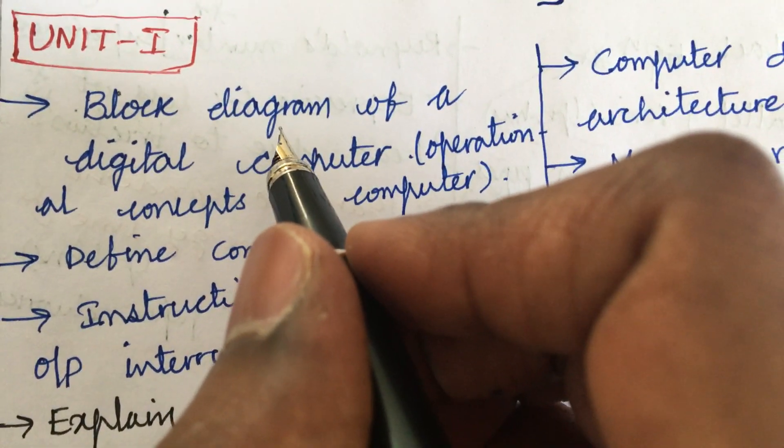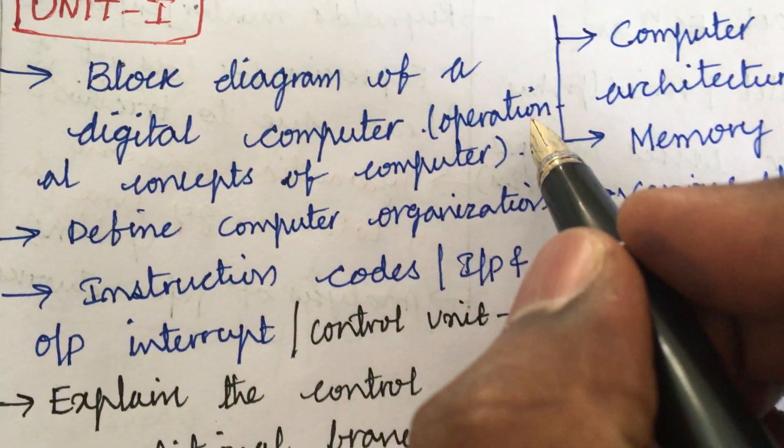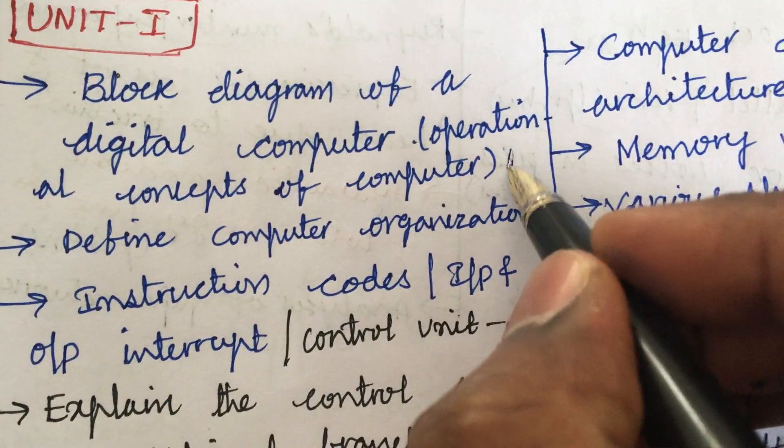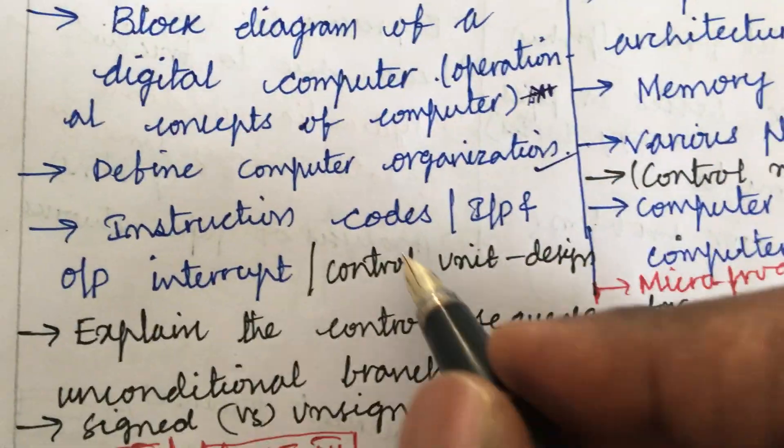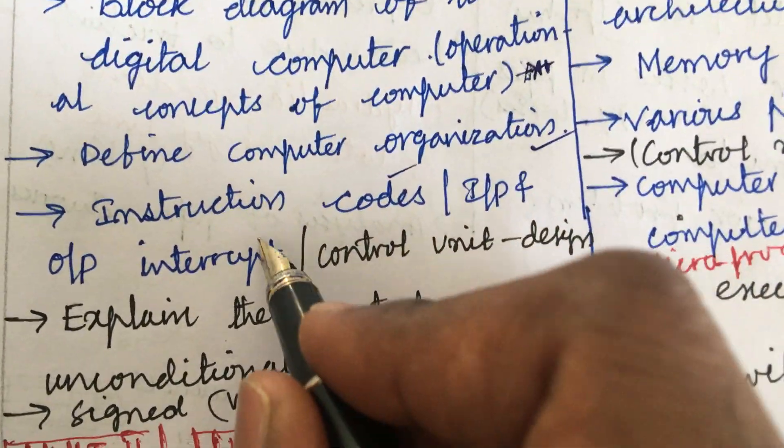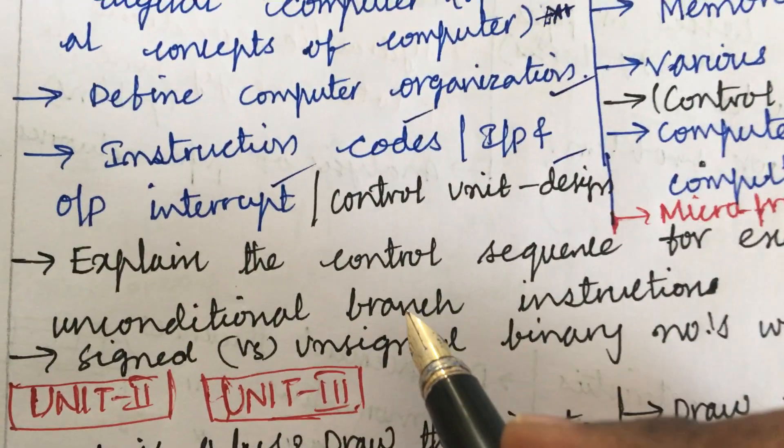The first and foremost unit you need to cover is Unit 1. It is about the block diagram of a digital computer and the operational concepts of a computer is said to be one of the topmost question. Define computer organization may be the short question, instruction codes input and output intent may be the short question, control unit design may be the long question dear students.